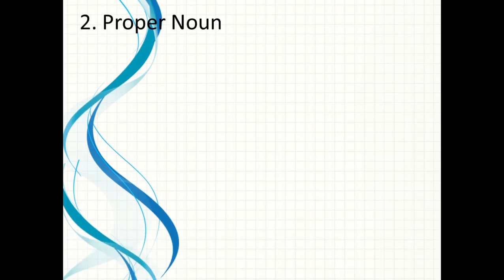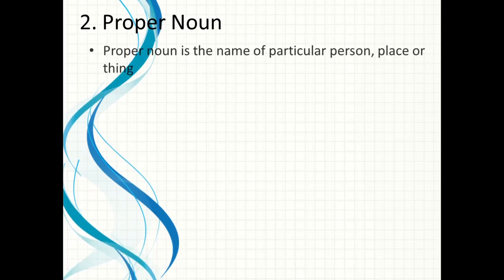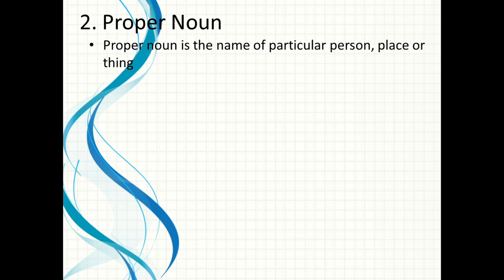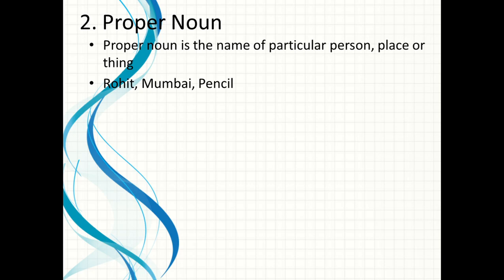Now, next is proper noun. Proper noun is the name of a particular person, place, or thing. Humne common noun ke baare mein padha ki jab hum kisi bhi person, place ya thing ko ek common name dete hain. Proper noun mein hum particular name dete hain — for example, Rohit, Mumbai, Natraj pencil.